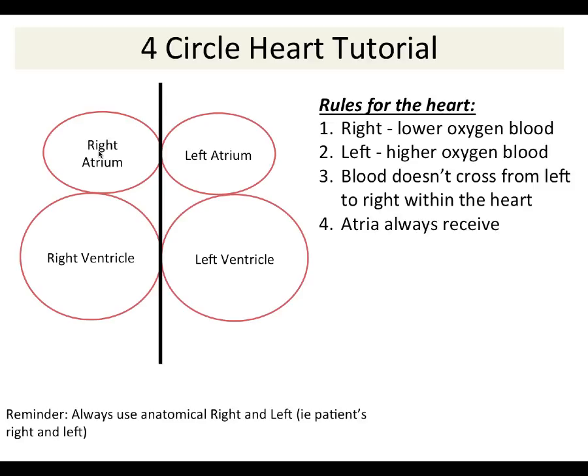The other rule is that the atria always receive blood — meaning they receive blood from outside the heart. The right atrium receives blood from all systemic tissue through the superior and inferior vena cava, and it also receives blood from the coronary sinus, which is part of the coronary blood system for the heart — so that's the blood draining the heart tissue itself.